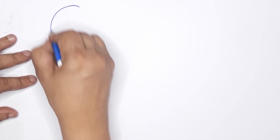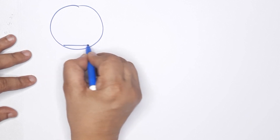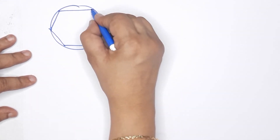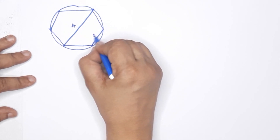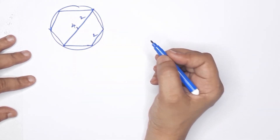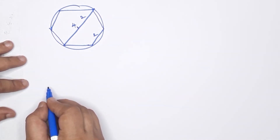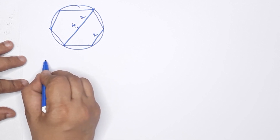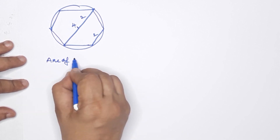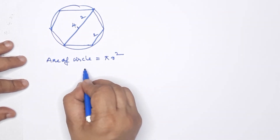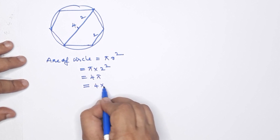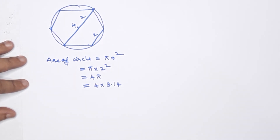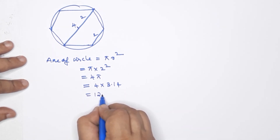This is the first figure. Now the second figure: a circle with a regular hexagon inscribed. The diagonal is 4 cm and the radius is 2 cm. The area of the circle = πr² = π × 2² = 4π = 4 × 3.14 = 12.56.